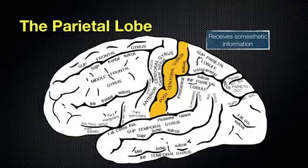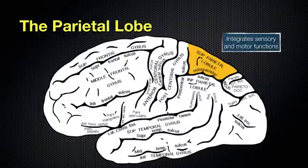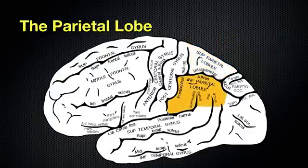So the postcentral gyrus is somatotopically organized — specific parts of this gyrus get information from specific parts of the body. Then we have the superior parietal lobule, which integrates sensory and motor functions. And then we have the inferior parietal lobule.